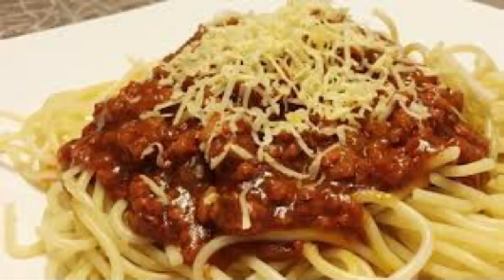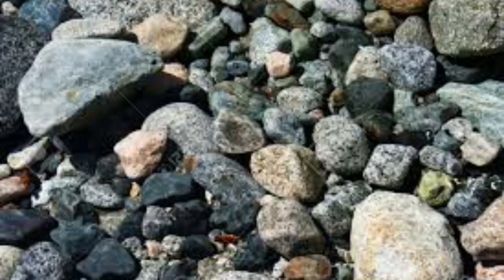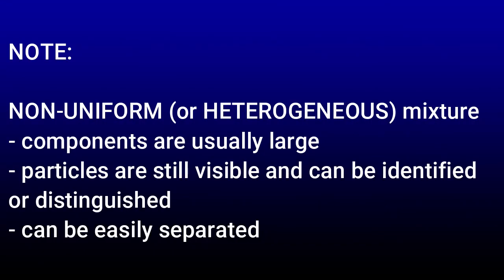Spaghetti can have hot dogs, noodles, sauce, meat, and other ingredients. Pebbles and rocks is another good example of non-uniform mixtures. For your notes, non-uniform or heterogeneous mixtures can be described as: components in the mixture are usually larger, particles in the mixture are still visible and can still be identified, and can be easily separated. Hetero is a Greek word that means different.